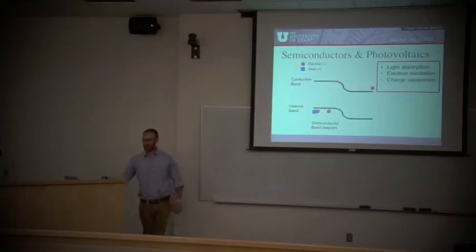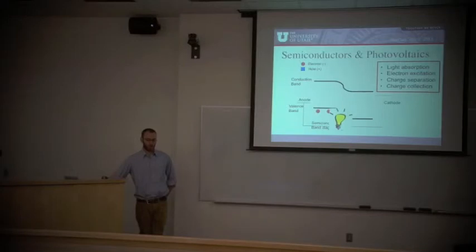You separate this positive charge here, where the electron used to be, and this negative charge. You separate those charges. If you add contacts and run a circuit, you can get electricity and you can use the power. That's the basic understanding of how photovoltaics work.